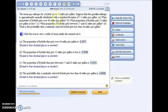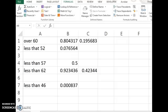For number 9, we have a hybrid car with the mean of 57 miles per gallon. That's pretty good. And the gasoline mileage is approximately normally distributed with the standard deviation of 3.5. And we're going to answer these questions. So the proportion of hybrids that gets over 60 miles per gallon, how are we going to figure that out? We're going to use Excel.